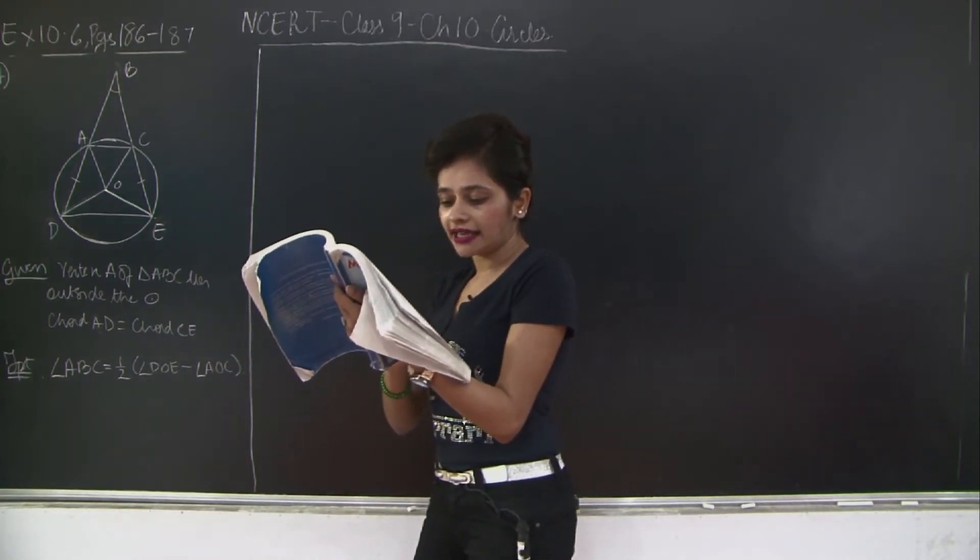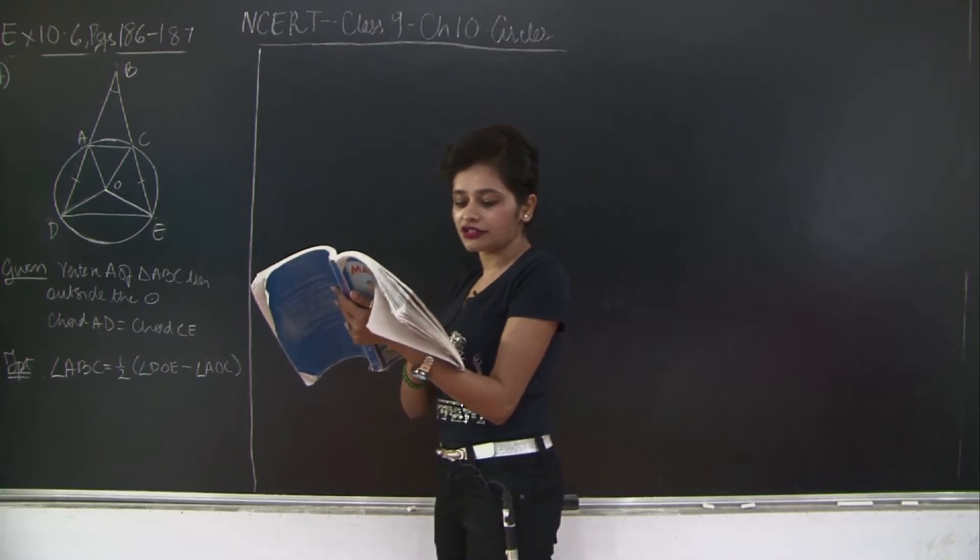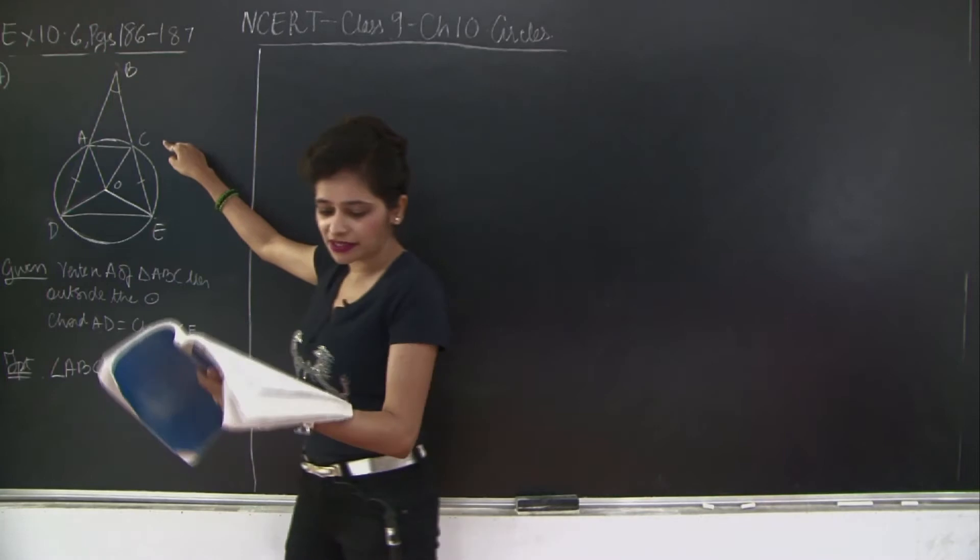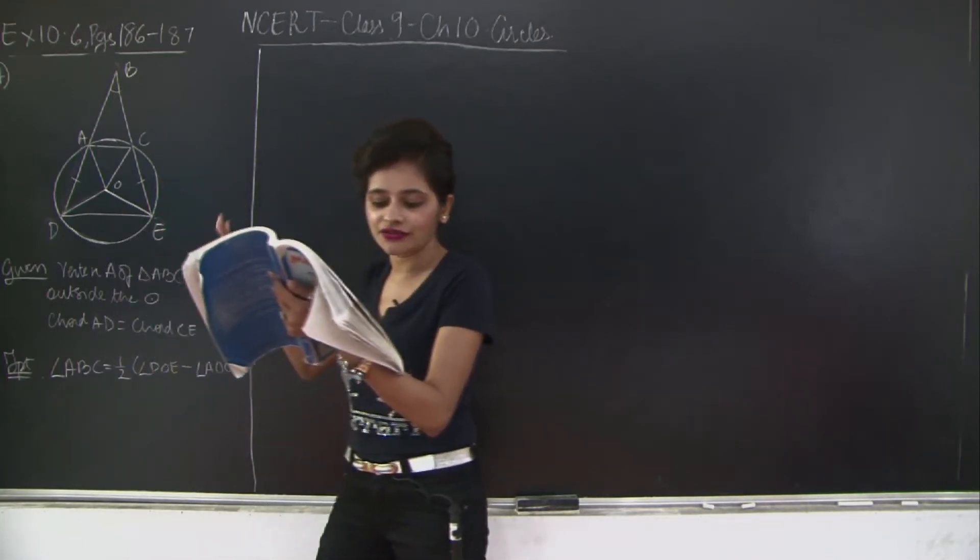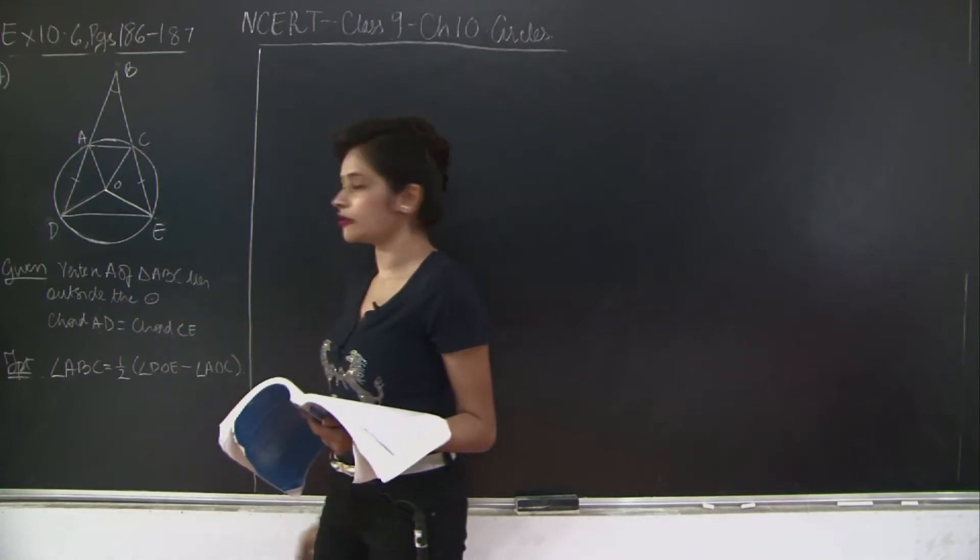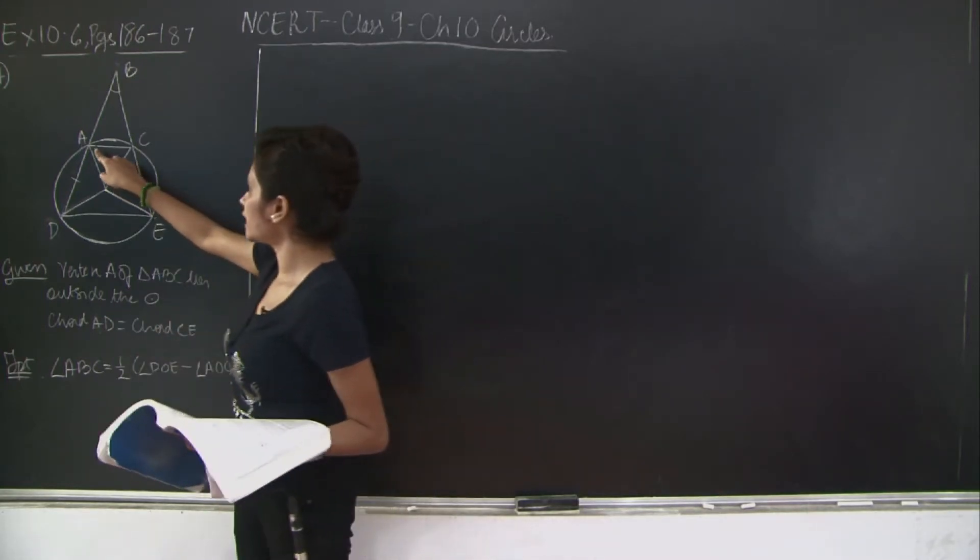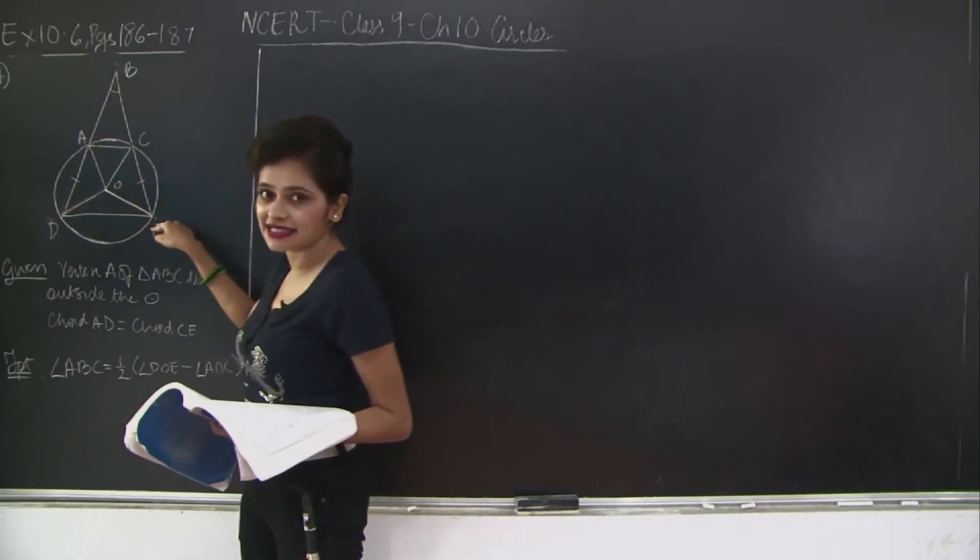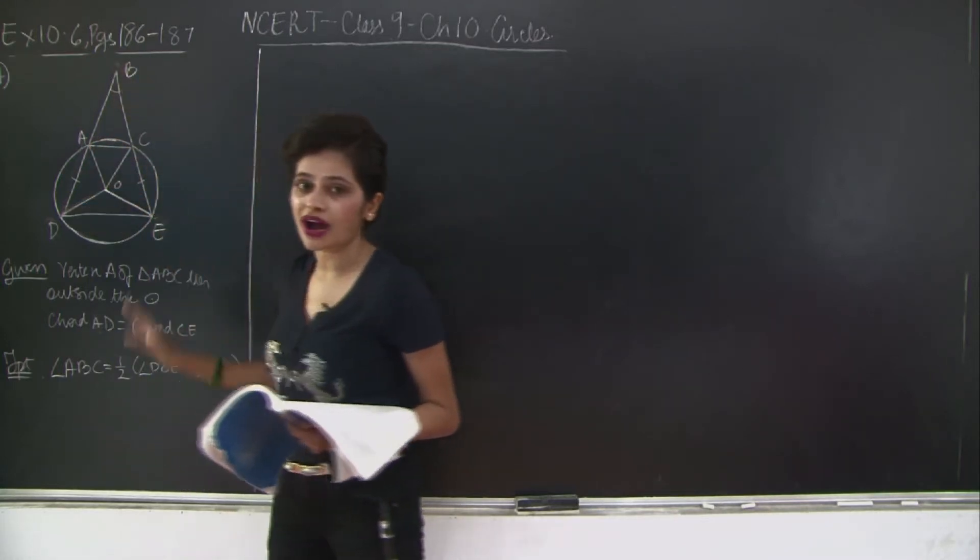Prove that angle ABC is equal to half the difference of the angles. So you have to prove that this angle ABC is equal to half the difference of the angles subtended by the chords AC and DE at the centre. So you need to show that whatever the angles are subtended by AC and DE at the centre, ABC is equal to half their difference.